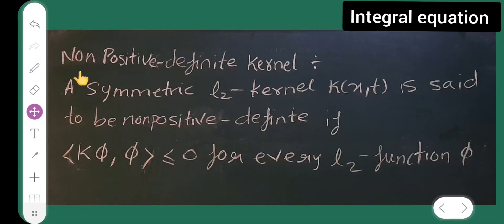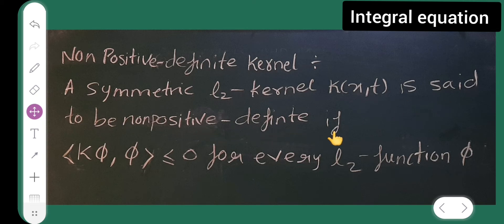The third definition is non-positive definite kernel. A symmetric L2 kernel k is said to be non-positive definite if the inner product k·φ,φ is less than or equal to 0. In positive definite it was greater than or equal to 0, but here for non-positive it is less than or equal to 0 for every L2 function φ.